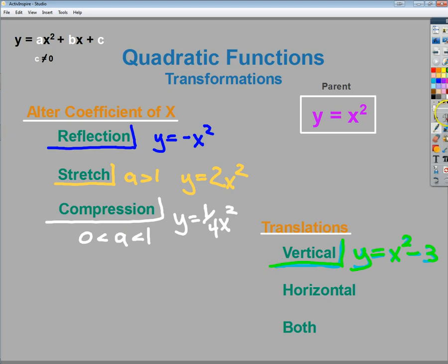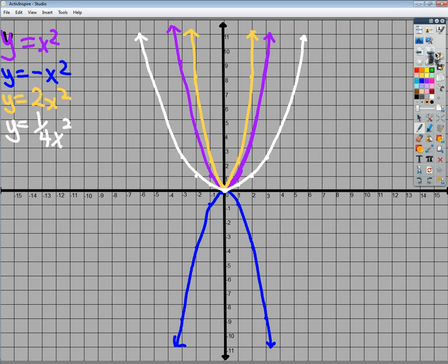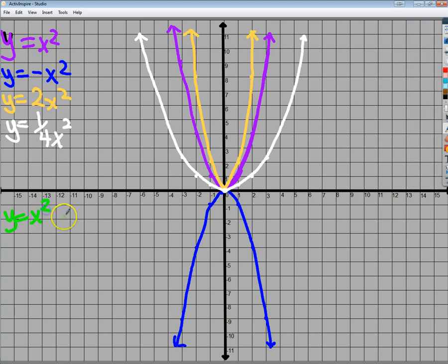So y equals x squared minus 3. Now what this will look like, the graph itself should look a lot like the purple one, because that's our parent and it hasn't changed. The only difference is instead of starting at 0, I'm starting at negative 3, which makes a reasonable amount of sense.